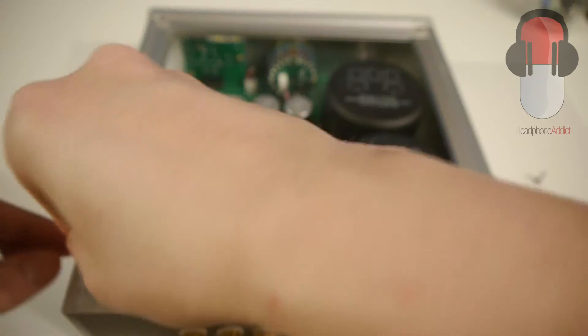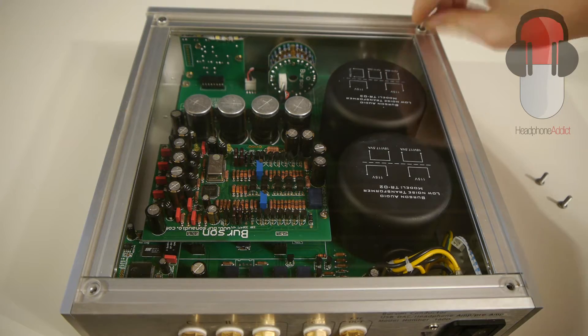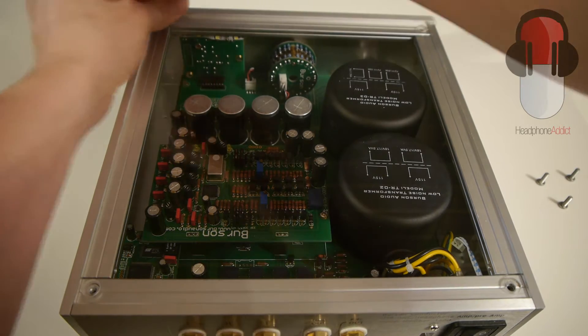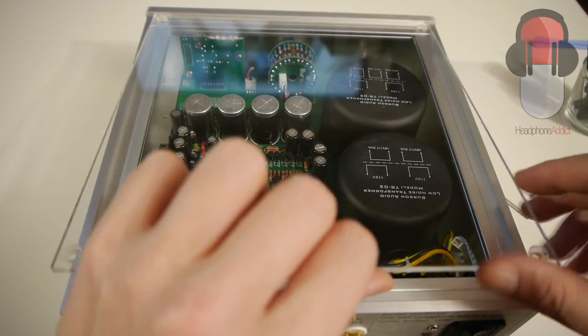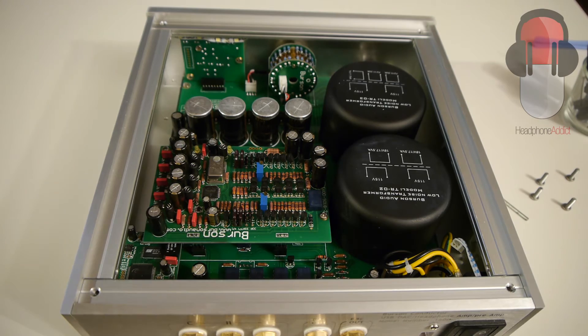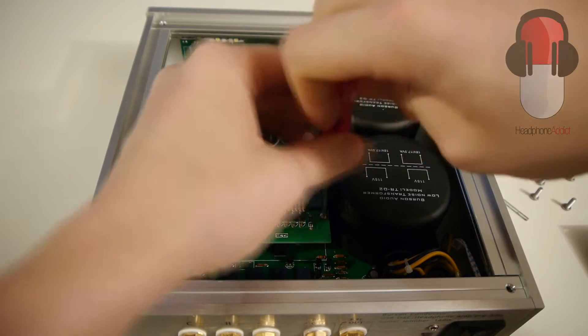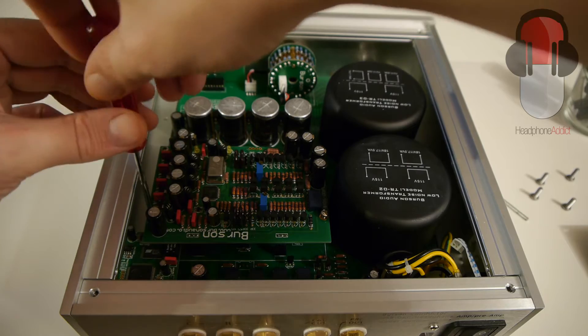Basically, this is just unscrewing the top plate to get into the parts of the machine. We're using a Phillips screwdriver to get the top plate off - I used an Allen key.